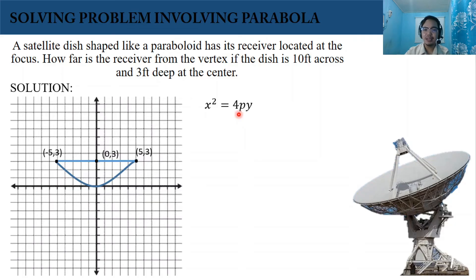P is what we are finding. This is where the receiver of the satellite dish is located. We can use these points, the (5, 3) or (-5, 3), because these points lie on our parabola.